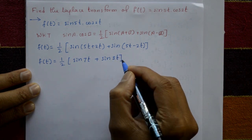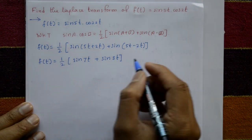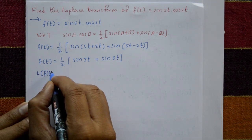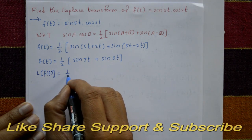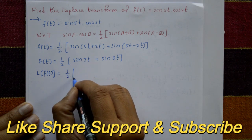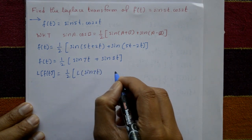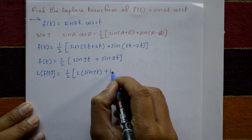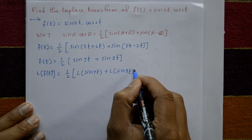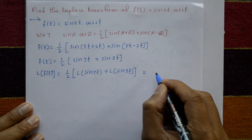Now applying the Laplace transform on both sides: L{f(t)} = (1/2)[L{sin(7t)} + L{sin(3t)}], using the standard Laplace function.